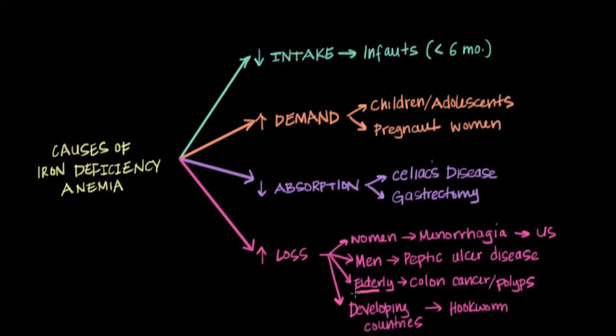In elderly people, very importantly, you always have to consider colon cancer or colon polyps as the cause of iron deficiency anemia. If an elderly individual walks in with new onset iron deficiency anemia, you should always do a hemocult test, which looks for blood in stool. If that's positive, if you find blood in the stool, then you could do a colonoscopy, inserting a camera through the colon to look for a possible cancer or polyp. These are the three steps you'd go through to diagnose someone with iron deficiency anemia.